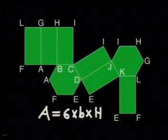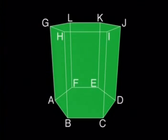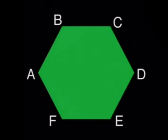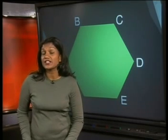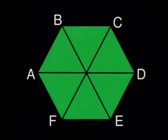But what about the hexagons? Can you think of a way to find the area of these hexagons? Have a look at the hexagon A, B, C, D, E, F. Could you cut this into shapes that we already know about? There are several possible cuts you could make. I'd say this is the easiest. You can divide the hexagon into six congruent triangles by drawing lines like this.